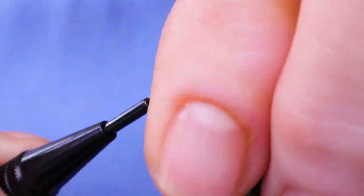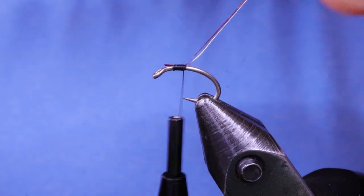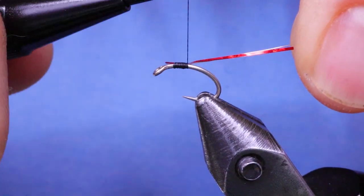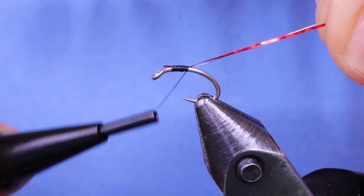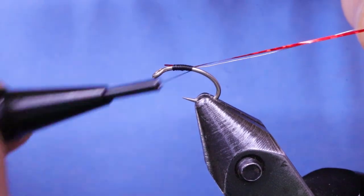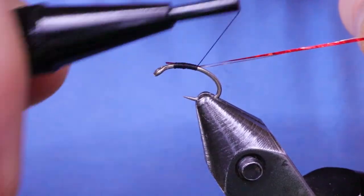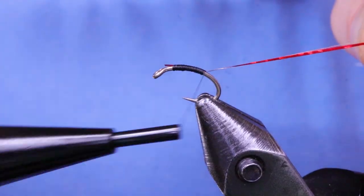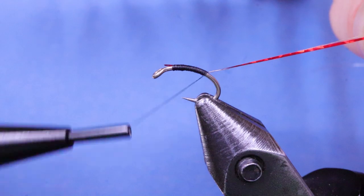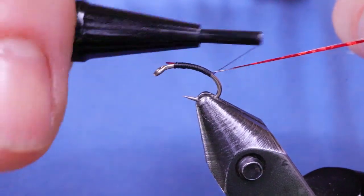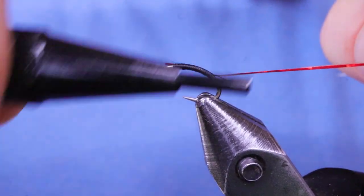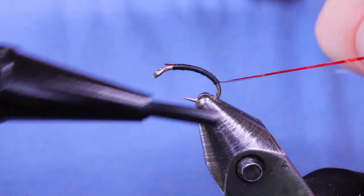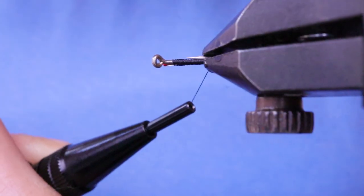Tie those in on top. I'm going to give my thread a little spin counterclockwise just to flatten it out a little bit. And then just start making thread wraps down the hook shank, trying to maintain a nice smooth body. I'm going to go quite far down the bend. I'm just going to check the other side.